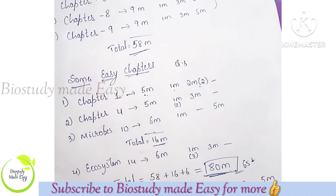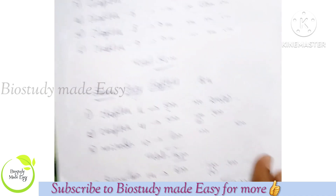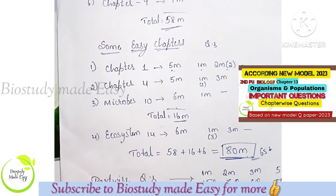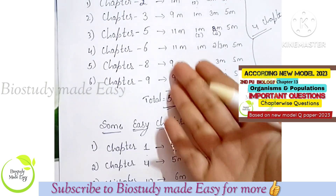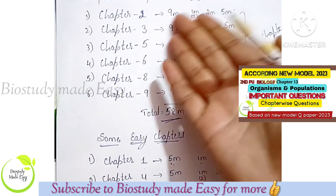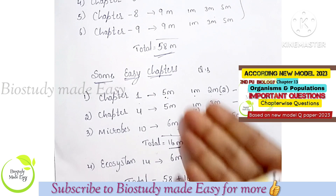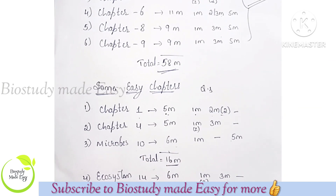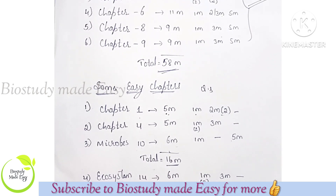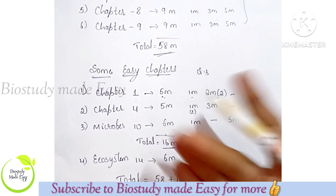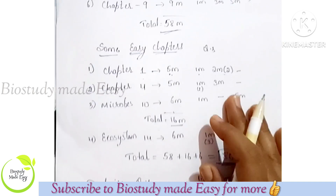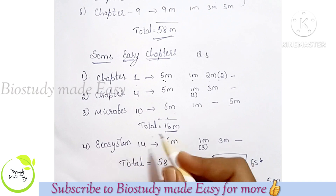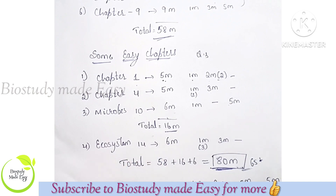Next, if you want to pass, choose four chapters. Even from those four chapters alone you can get around 40 marks, plus an additional 10 marks, making 50 marks total — which is enough for students who just want to pass. So choose those four chapters and study them well.